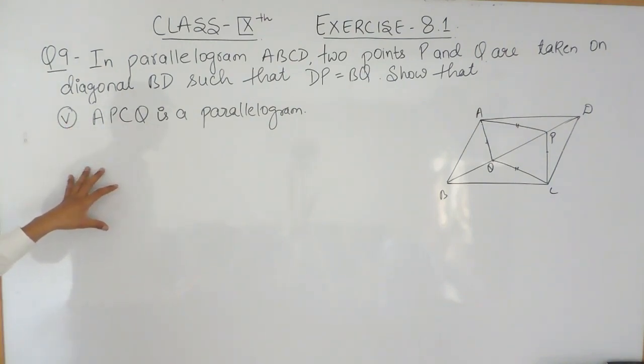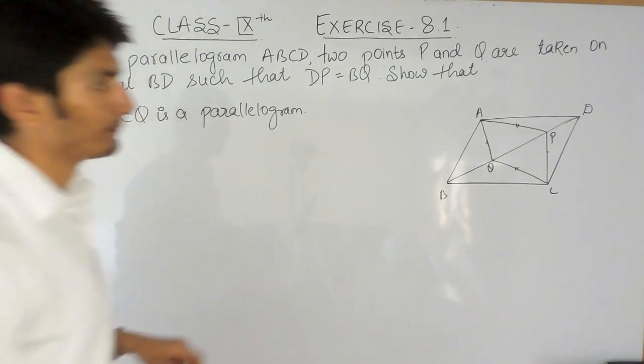The question states that ABCD is given to you as a parallelogram and there are two points on the diagonal, Q and P, such that BQ is given equals to PD, and you have to prove that APCQ is also a parallelogram.